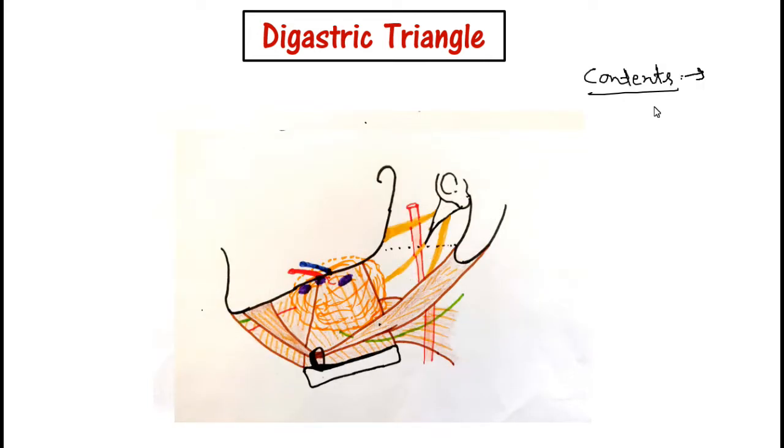Now we will see the contents. We have the superficial part of the submandibular gland, and the facial vein and facial artery near the anterior border of the masseter muscle.